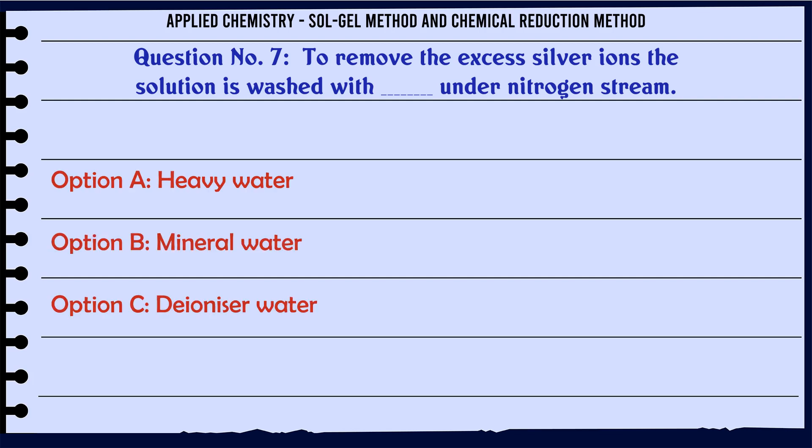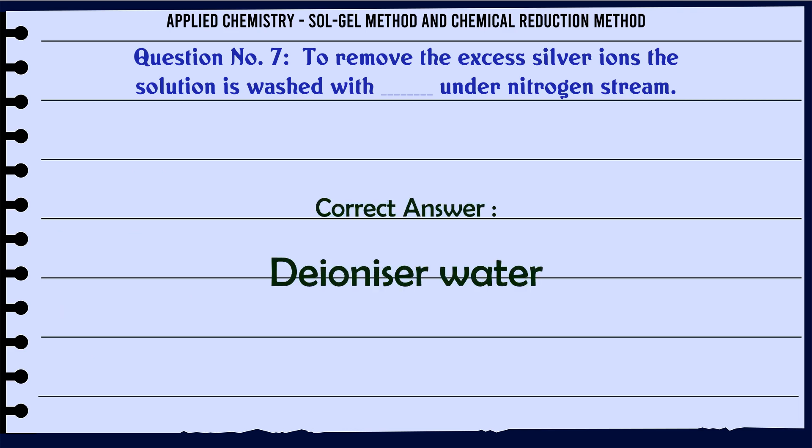To remove the excess silver ions, the solution is washed with which water under nitrogen stream? A. Heavy water, B. Mineral water, C. Dionysed water, D. Impure water. The correct answer is Dionysed water.